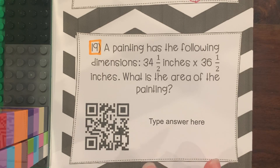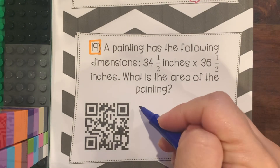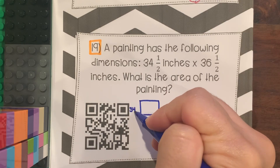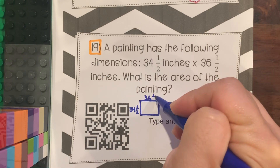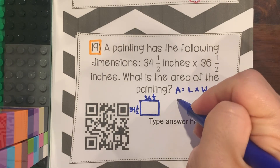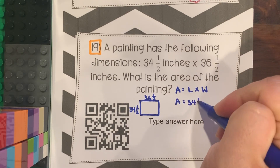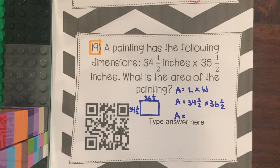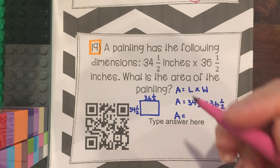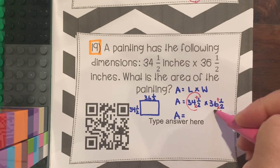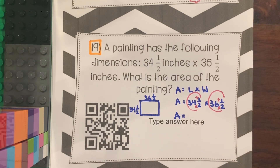Number 19: A painting has dimensions 34 and a half inches by 36 and a half inches. What is the area? I'm guessing it's a rectangular painting. Area of a rectangle is length times width — always start with the formula. Substitute: area equals 34 and a half times 36 and a half. You cannot multiply with mixed numbers, so you must do 'around the world' on both of them, rewrite them as improper fractions, and then multiply.